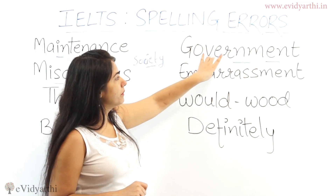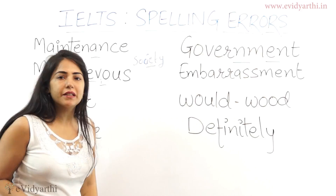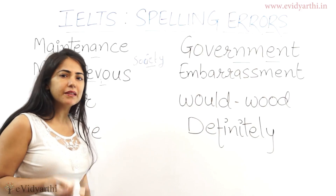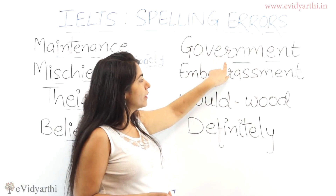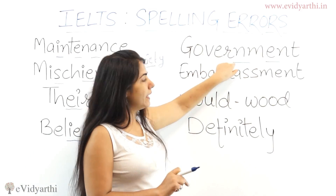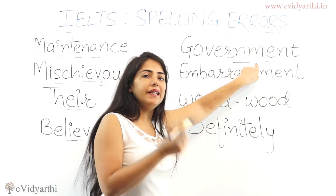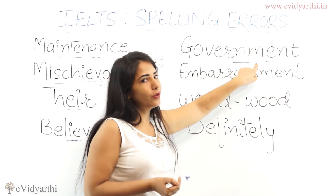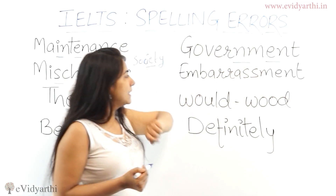Similarly, there is one more word similar to 'government' — that is 'environment.' The same problems occur: people forget to use 'N' and they use '-M-A-N-T' instead of '-N-M-E-N-T.' So be careful with 'environment' as well.